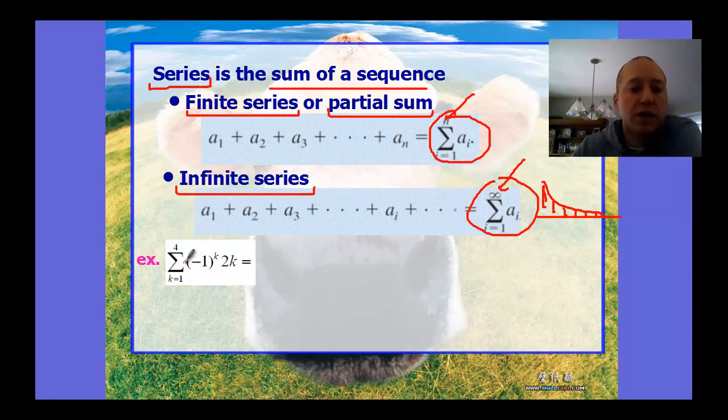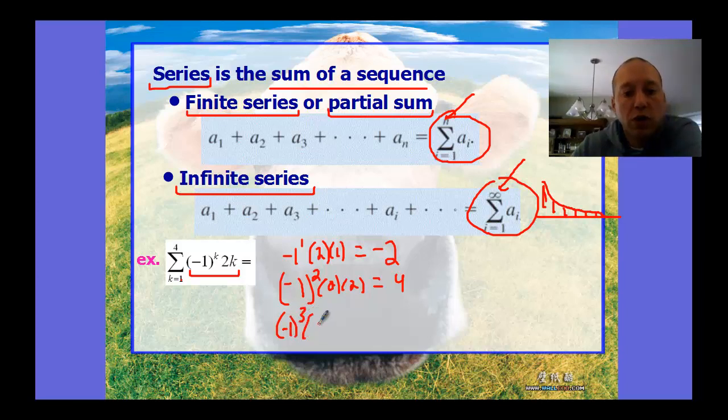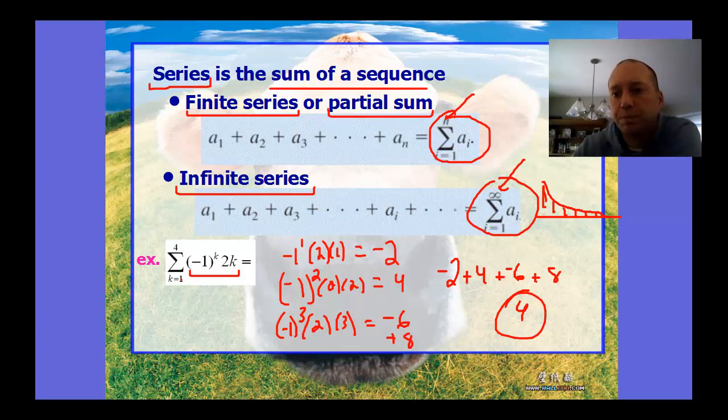Here's a partial sum or finite series where you're adding from 1 to 4 of this pattern. You're just plugging numbers 1 through 4 into this pattern. I plug 1 in: negative 1 to the first power times 2 times 1, so negative 1 times 2 or negative 2. I plug in 2: negative 1 squared and 2 times 2, so 4 times positive 1 or 4. I plug in 3: negative 1 cubed, 2 times 3, so 6 times negative 1 or negative 6. You can see the pattern - increasing by 2, signs becoming opposite. Plug in 4: we have positive 8. These are the four different numbers and we add them. The summation is negative 2 plus 4 plus negative 6 plus 8. If we do that, we have 4. That would be the partial sum.